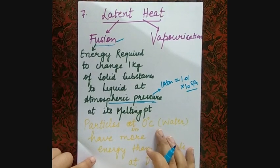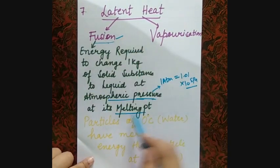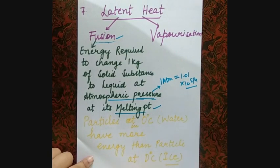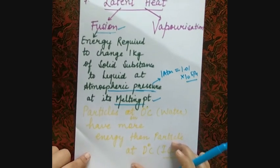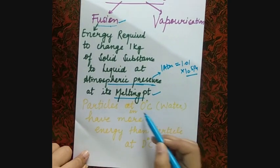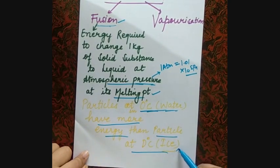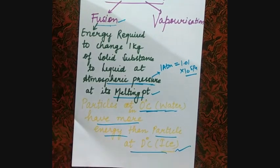At its melting point, when 1 kg of solid converts to liquid, the particles that are 0°C water have more energy compared to the 0°C ice particles. So 0°C water particles have more energy than 0°C ice particles.